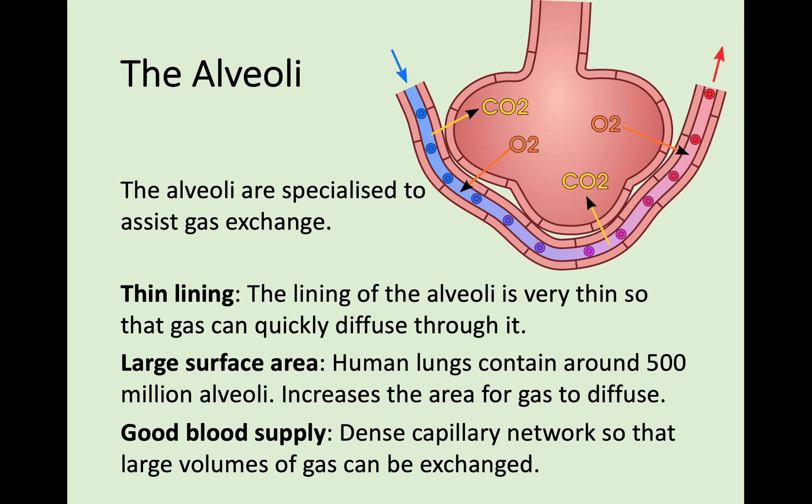The last thing that the alveoli have that makes them very good at gas exchange is that they have a very good blood supply — dense capillary networks around every single one of these 500 million or so alveoli, which means that large volumes of gas can be exchanged. It's a very quick and very efficient process. So, to summarise: the alveoli are the site of gas exchange in the lungs, and they have a thin lining, a large surface area, and a good blood supply, which makes them very good at their job.